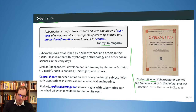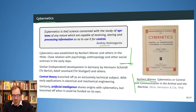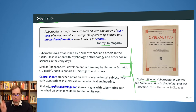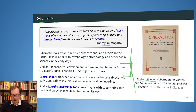Cybernetics was founded in the 1940s. Back then it was a mixture of many fields interested in feedback mechanisms — not only technical sciences, but also psychology, anthropology, and many others. Besides the development in the US, there was also an independent development in Germany by Hermann Schmidt, Adolf Leonhardt, Rudolf Oldenburg, and others. But the cybernetics stream from the US is the more prominent one.